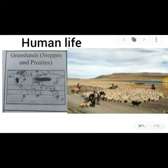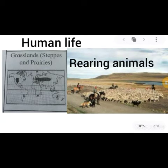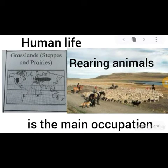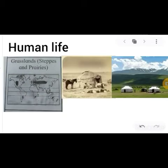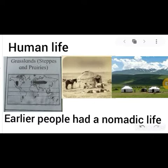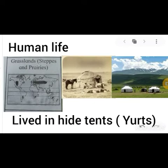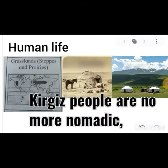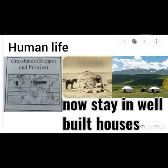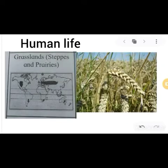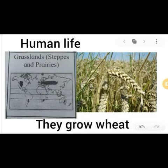Human life in the steppes and prairies natural region: rearing animals is the main occupation of the people here. Earlier, people had a nomadic life and lived in hide tents known as yurts. Kirgiz people are no longer nomadic and now stay in well-built houses. They also grow wheat. Such is the type of human life seen in the steppes and prairies natural region.